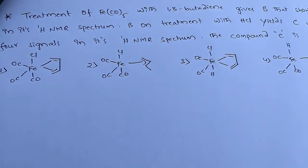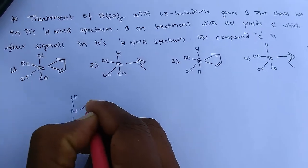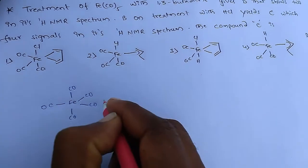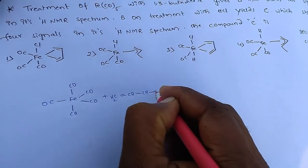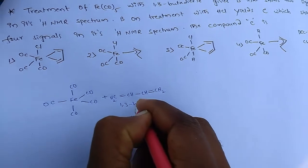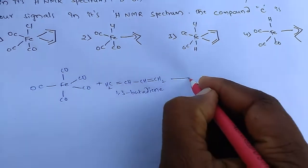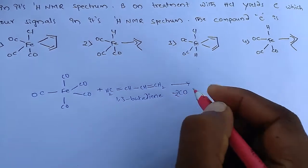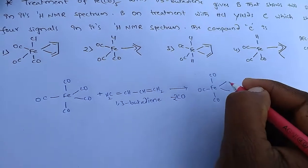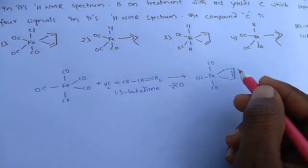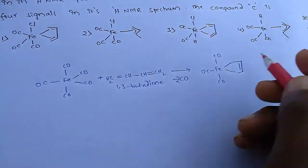In the given problem, the structure of iron pentacarbonyl is drawn. When this reacts with 1,3-butadiene, by the loss of 2 CO molecules, it forms a complex. This is the butadiene iron tricarbonyl complex, and this is compound B.